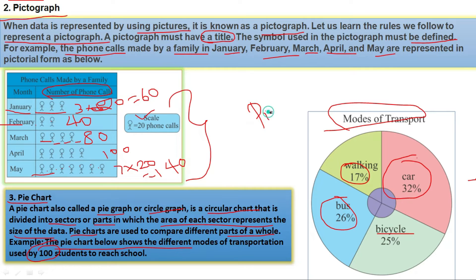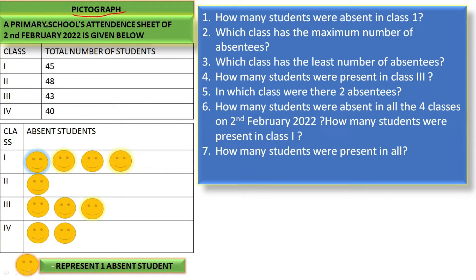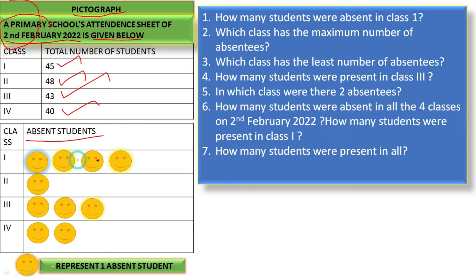A primary school's attendance sheet of 2nd February 2022 is given. 1st standard has 45 students total, 2nd standard 48, 3rd standard 43, and 4th standard 40. On that day, 4 students were absent in 1st standard, 1 student absent in 2nd standard, 3 students absent in 3rd standard, and 2 students absent in 4th standard.